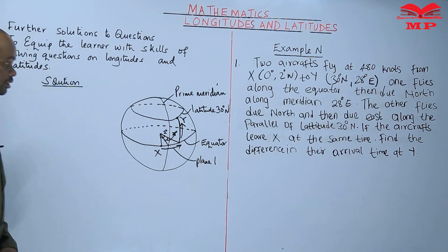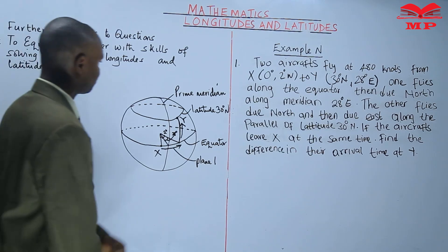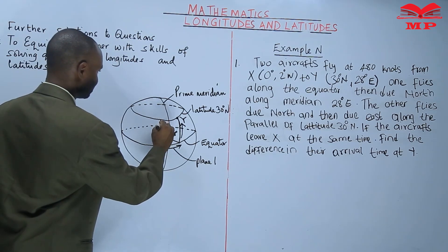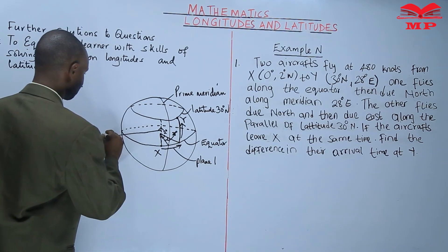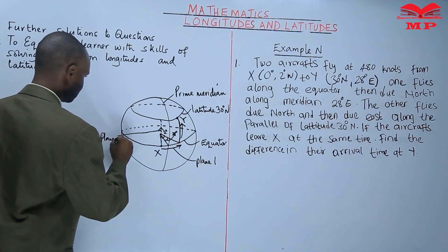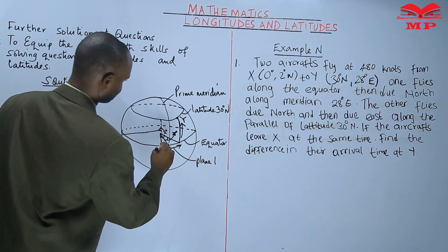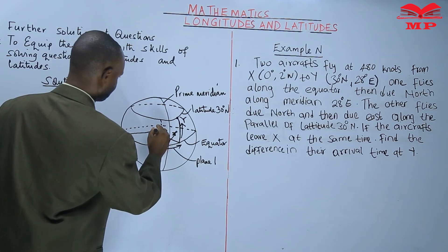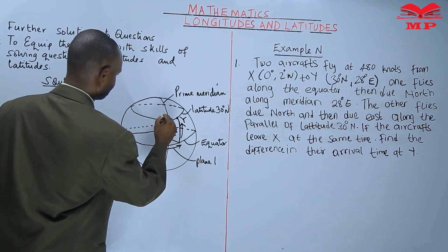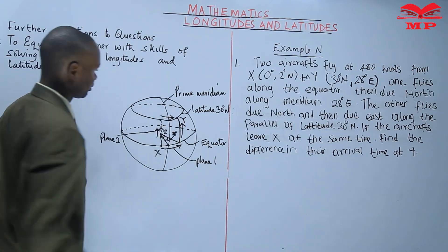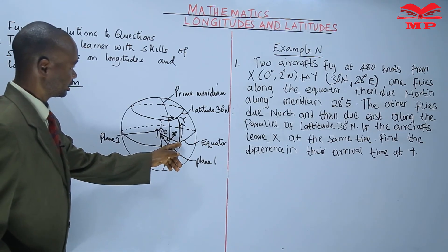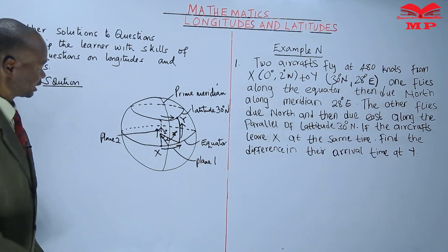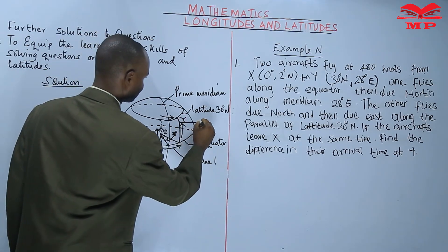That is plane one. Plane two: the other flies due north, so it will move from X due north. That will be the route of plane two. Plane one moves due east then due north along meridian 28 degrees — so this is meridian 28 degrees.